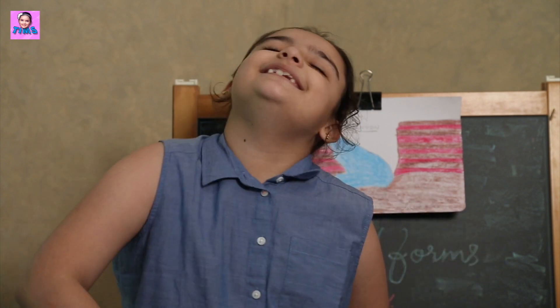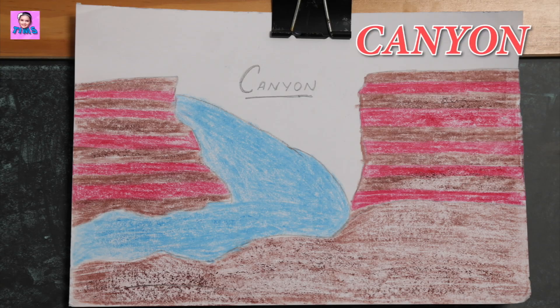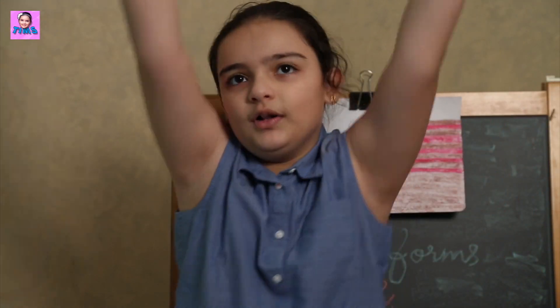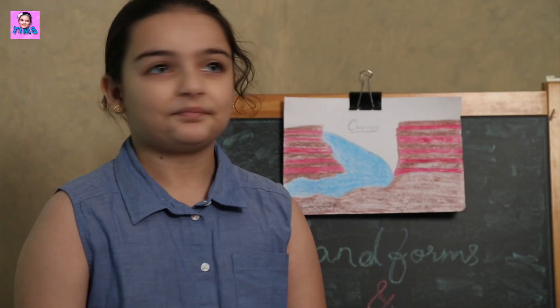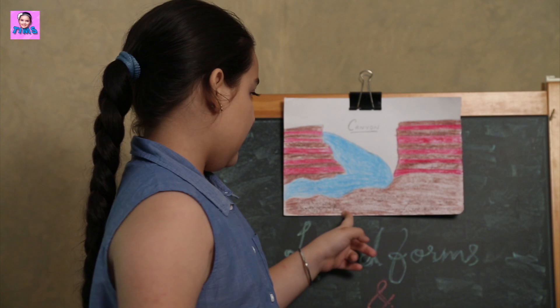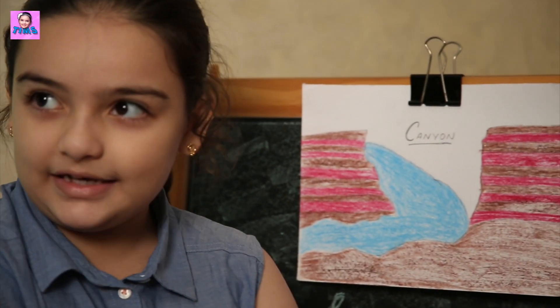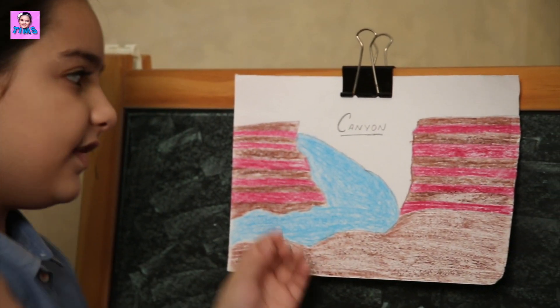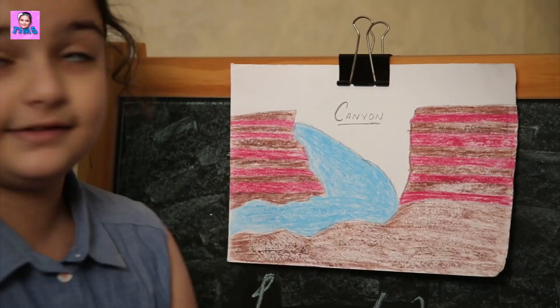Moving on is canyon. A canyon is a deep, narrow valley with high steep walls. As you can see, it's deep, it's a valley, and it has high steep walls.